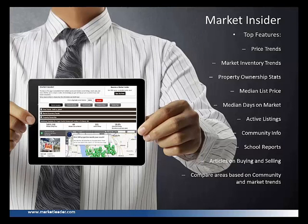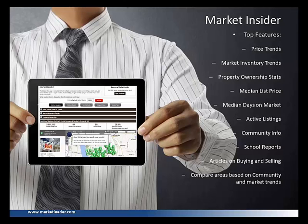If you don't have Market Insider and you're using the local tab, Community Served is even more important. The local tab community content is blank unless you edit it and add content. With Market Insider, you get reports that fill in for you. But with the local tab you choose what you show. Think about adding price trends, median list price, median days on market. Market Insider updates once a month, so if you're doing this manually for a local page, you could update it monthly or have an admin help.